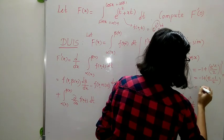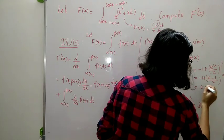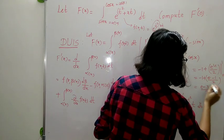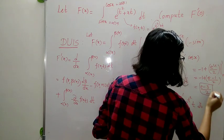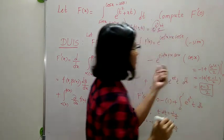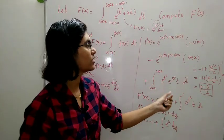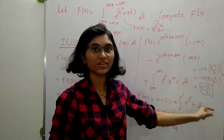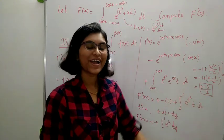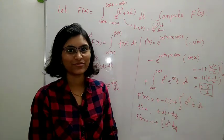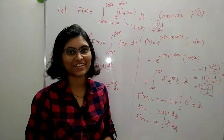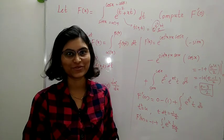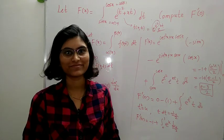So f'(0) = −1 + (e − 1)/2 = (e − 3)/2. I hope you like this video. Thanks a lot for watching. Please like, share, and subscribe if you find this useful. Thank you.